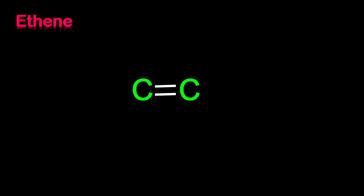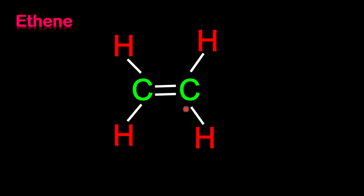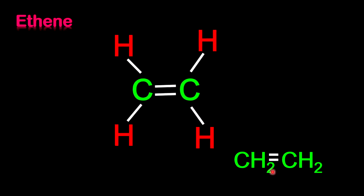Our first example is ethene, the simplest alkene. We have 2 lines from the double bond, so we need only 2 more lines on each carbon for hydrogen atoms. The structural formula looks like this for ethene, and the condensed formula is CH2=CH2. Notice the number of hydrogen is twice the number of carbon atoms.